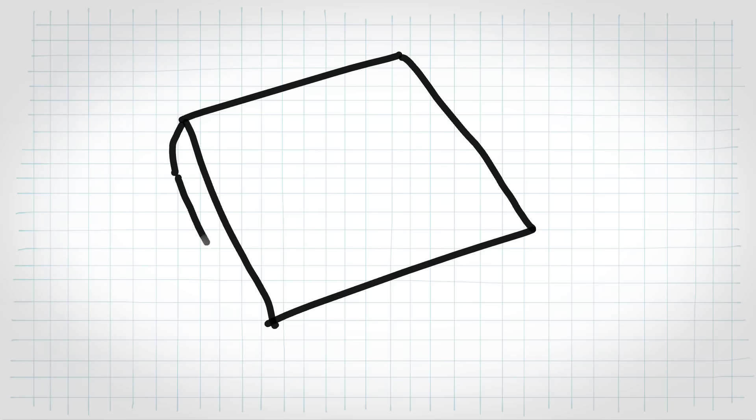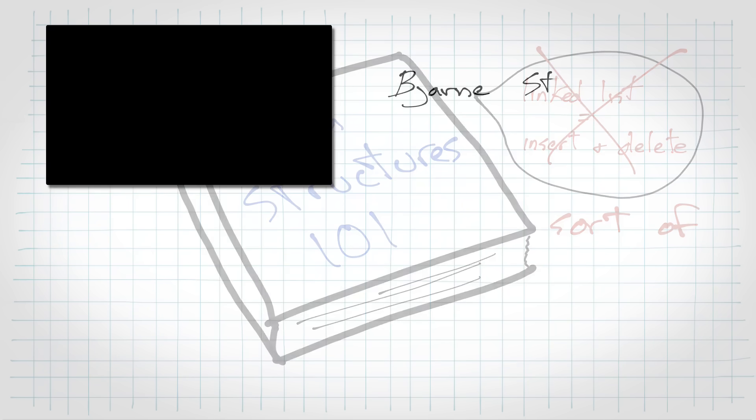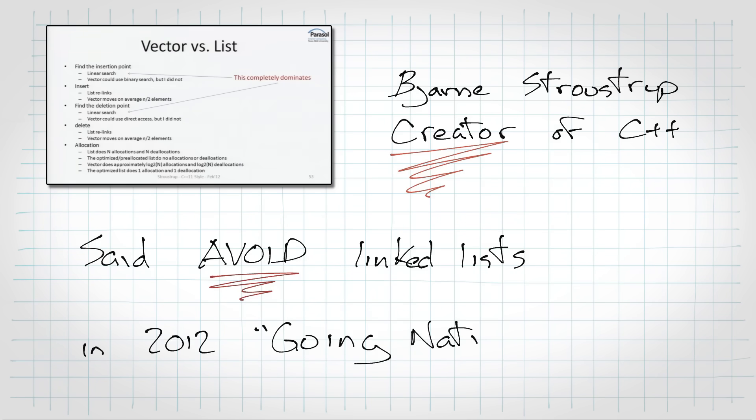Why would I ever choose this over an array? The canned response is to say, you evaluate your needs. And if you need to do lots of insertions and deletions, go for a linked list. But that's pretty vague. I'll buck the trend a bit and say that, not that that advice is wrong, but I'll add that I've actually had very few instances in my career where I've needed a raw linked list.